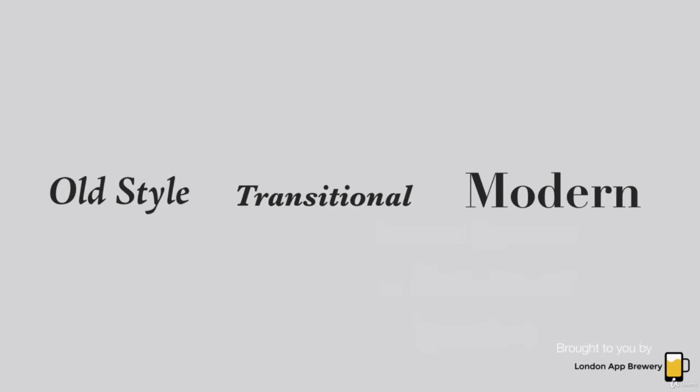When you compare old style versus transitional versus modern side by side, and look at the thinnest versus the thickest parts of the letters, you'll see that as you progress from older to more modern typefaces, there is an increased difference in what we call the modulation of the typeface.